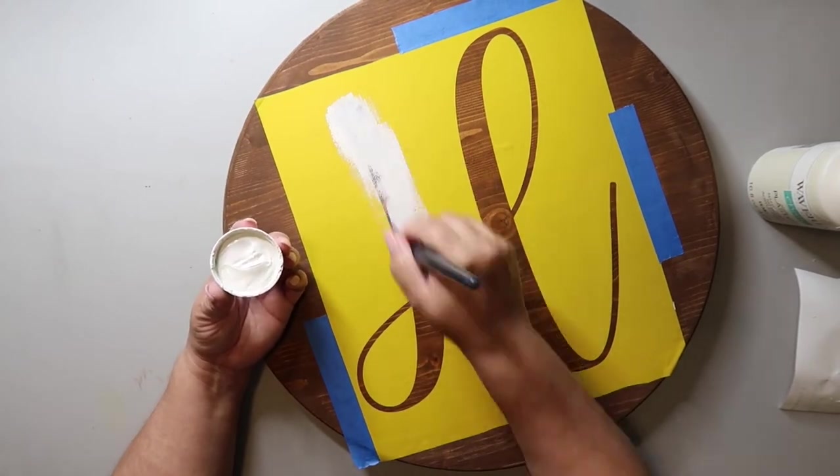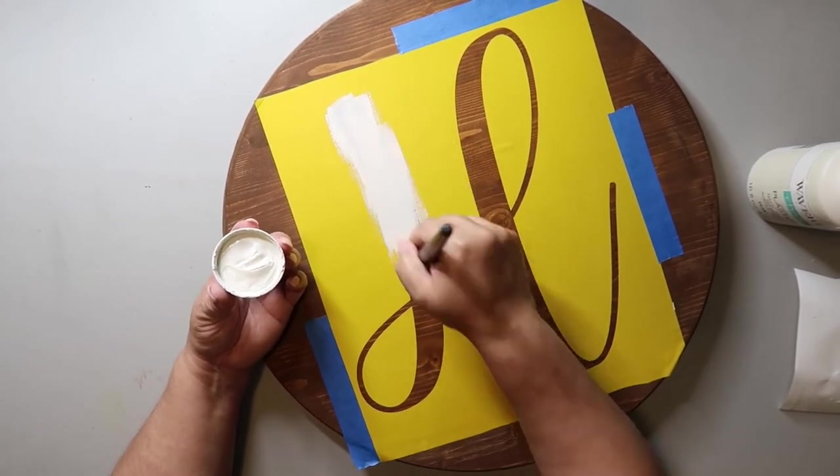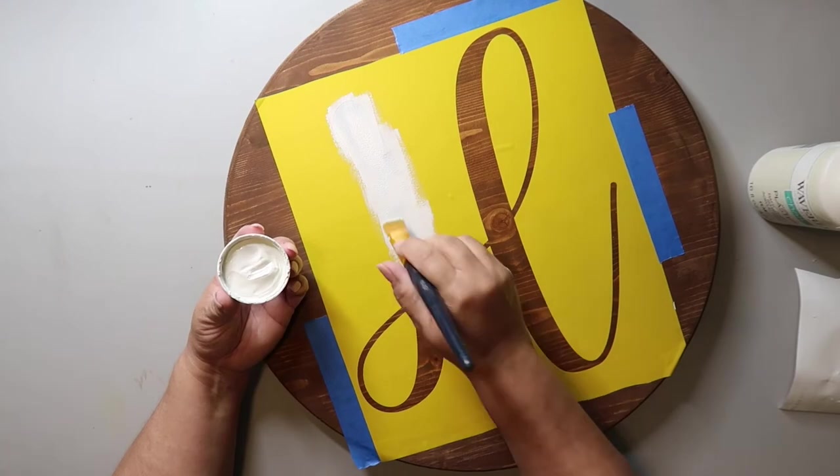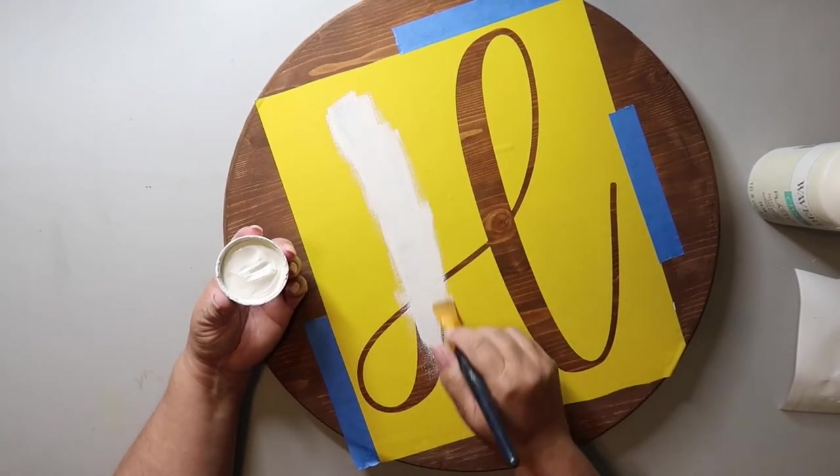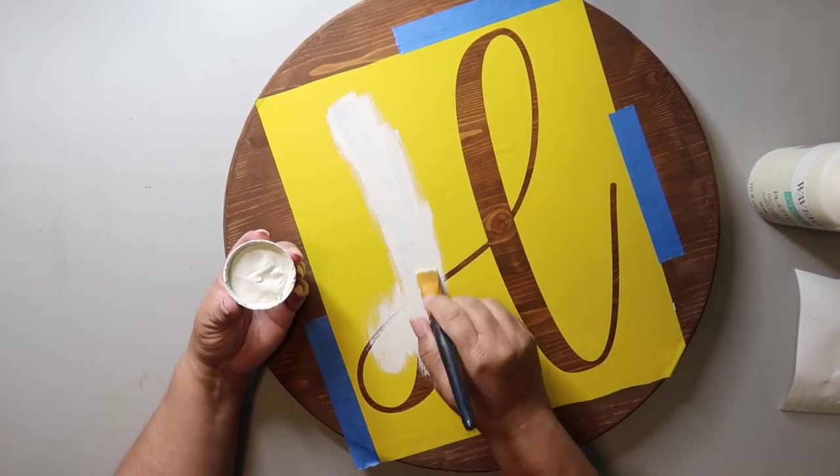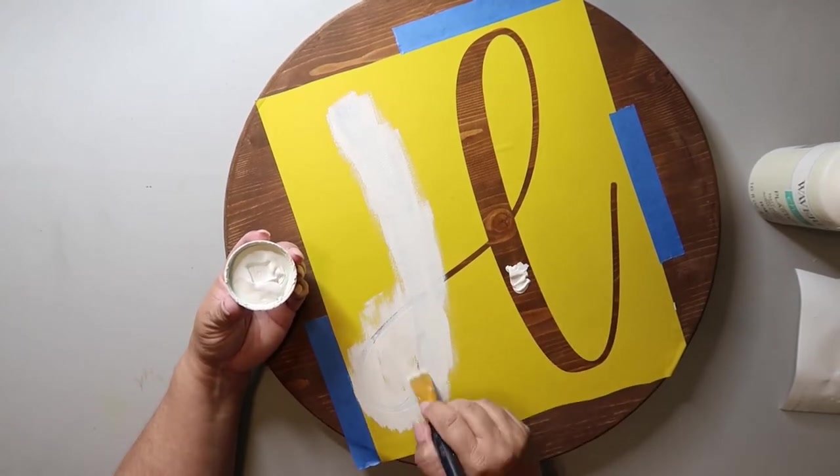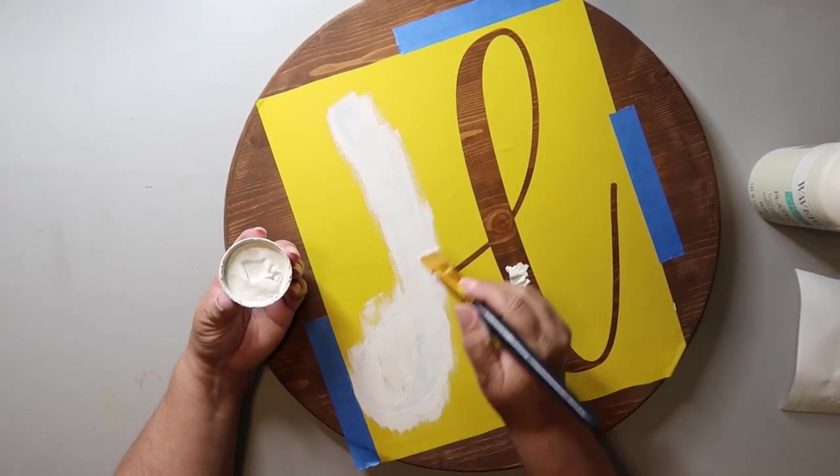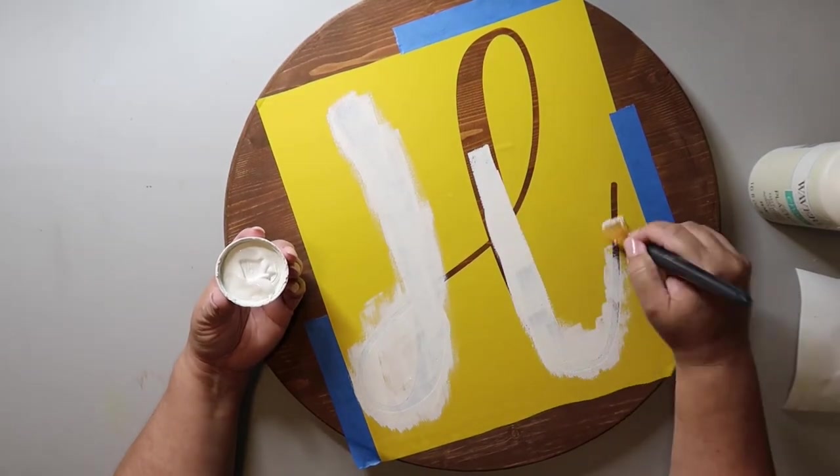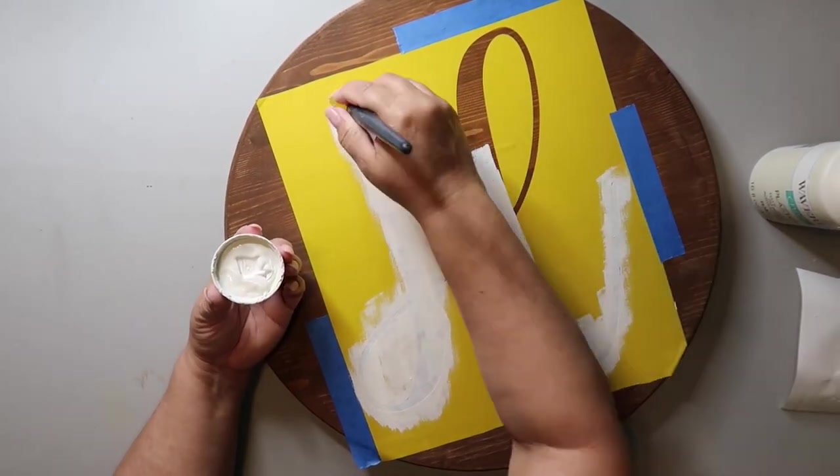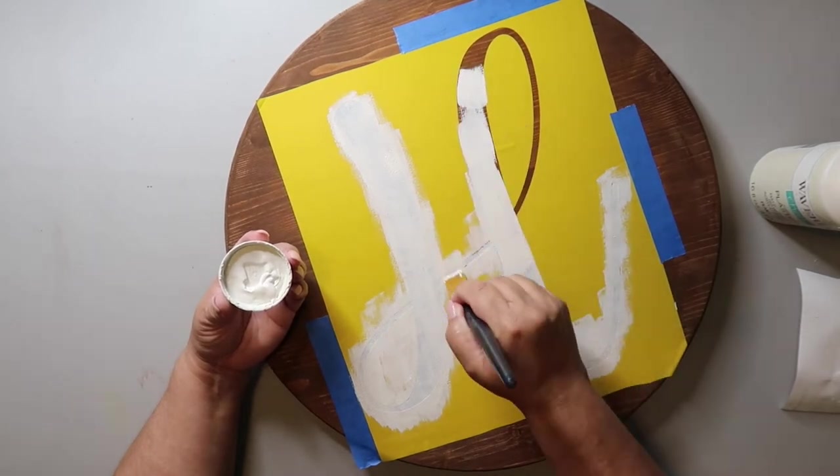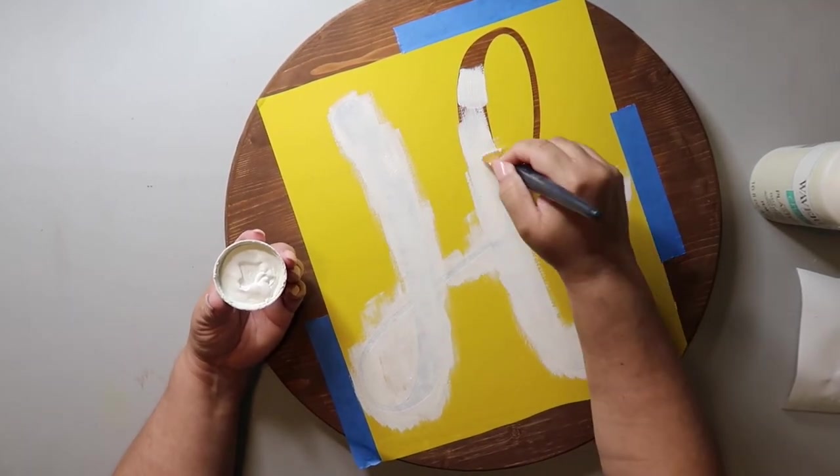Now for this part I'm using Waverly chalk paint in the color plaster. It's a little bit warmer white and I think it goes nicely with the wood. I'm actually just painting it on but I am being careful to not push the paint under the stencil, and again when in doubt less is more. You can always paint another coat but to me it's harder to correct it if you went too thick. So this time I didn't really go in the direction of the wood. I'm just painting and I don't think it makes a difference but I'm just telling you what I did.